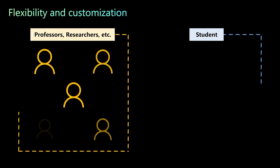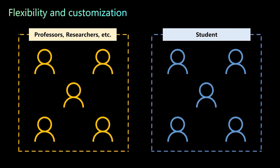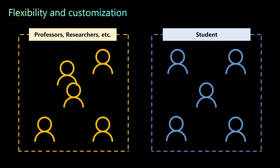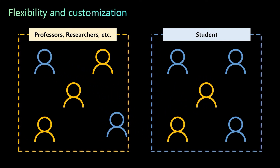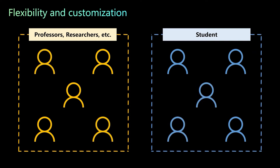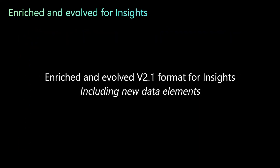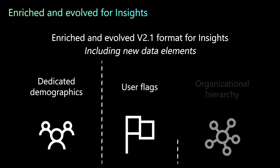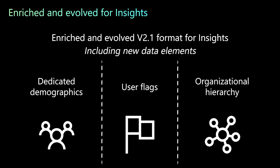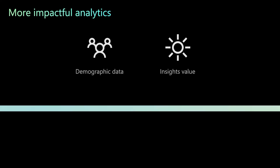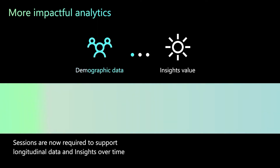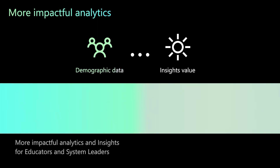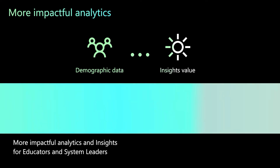Flexibility and customization are also greatly improved. Unlike previous versions, we now support user roles at the class level for higher education scenarios where professors, researchers, and others may also be students in some classes. We've also enriched the version 2.1 format for insights, including new data elements like dedicated demographics, flags data, and organizational hierarchy CSV files. Sessions are now required to support longitudinal data and insights over time, providing more impactful analytics for educators and system leaders.